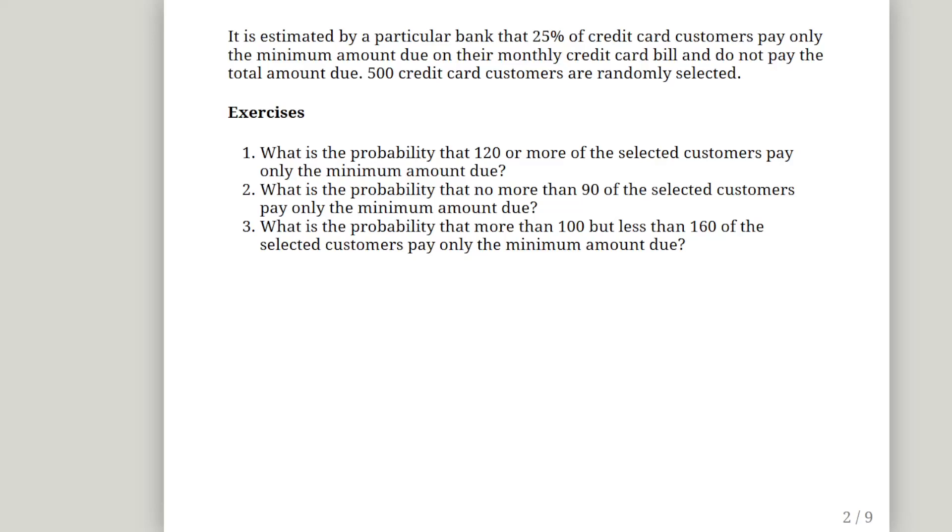Now firstly let's be very careful about how these are worded. 120 or more starts with 120 and goes up all the way to 500. In the second question, no more than 90 can include 90 in the interval that we're interested in. And again, more than 100 so we don't include 100 in our interval, and less than 160.